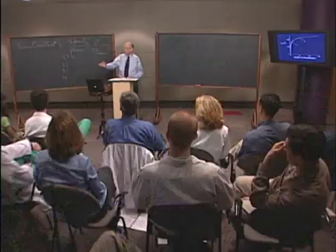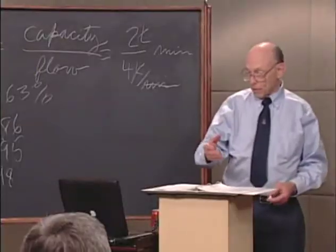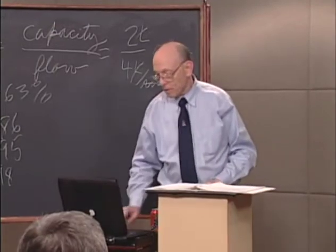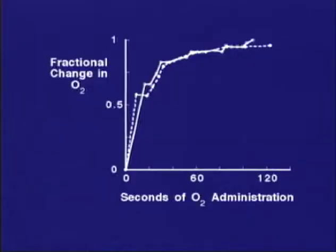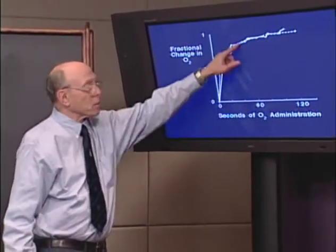A gas for which this time constant applies — one we use every day — is oxygen. If you measure the rate of change of oxygen concentration in the lungs using a non-rebreathing system, within 30 seconds you reach about 63%, at one minute about 86%, and at a minute and a half close to 95%.